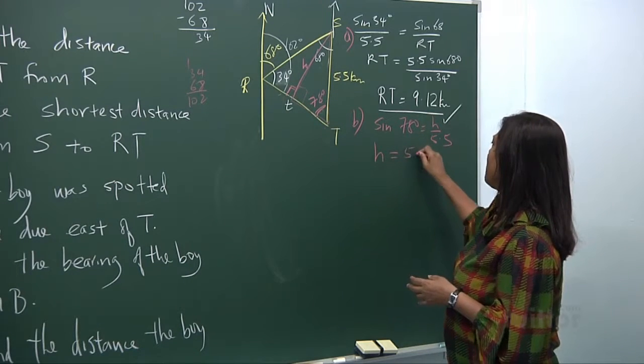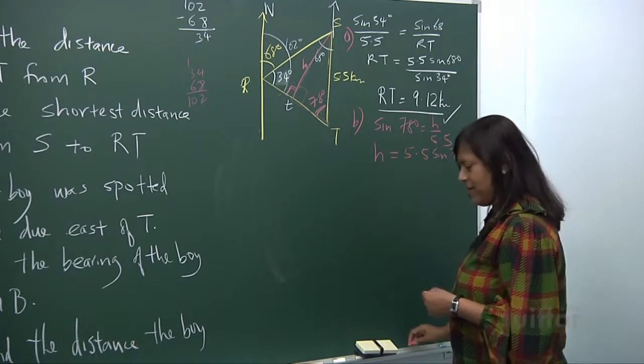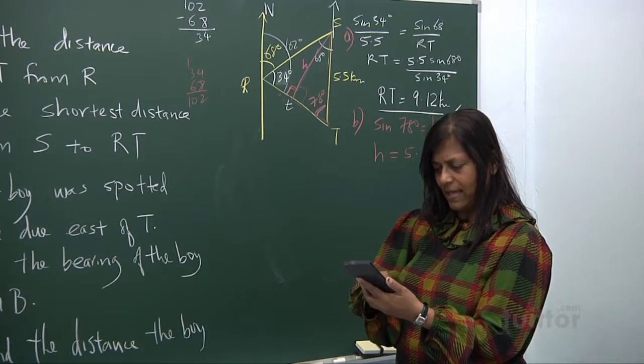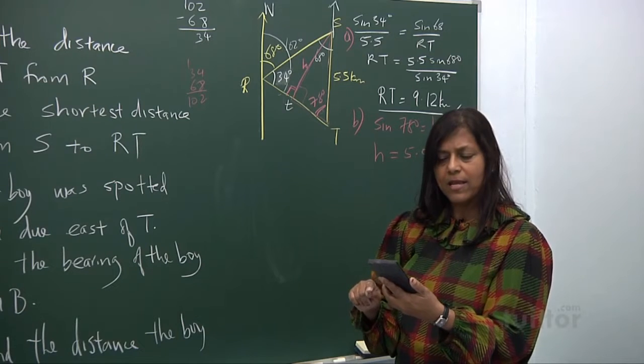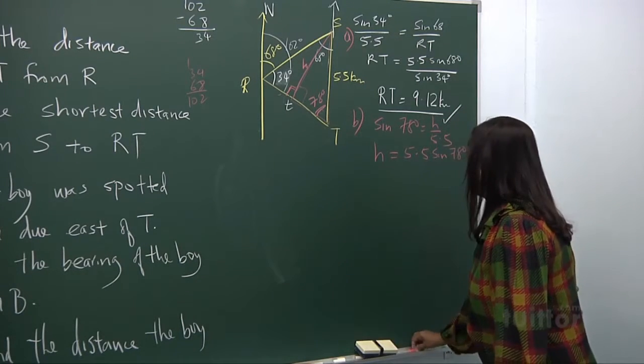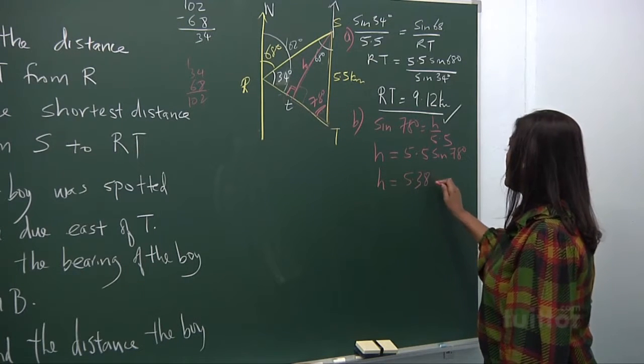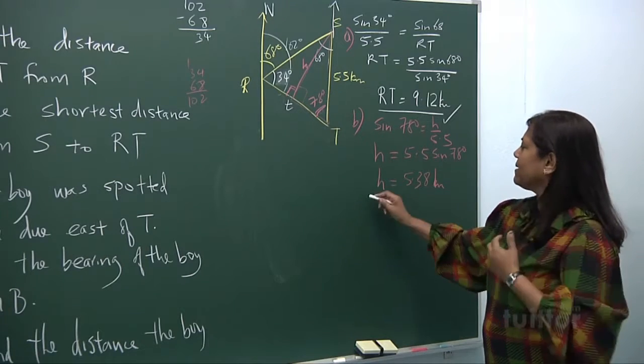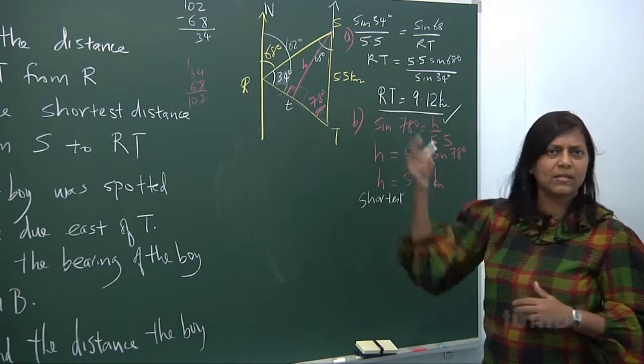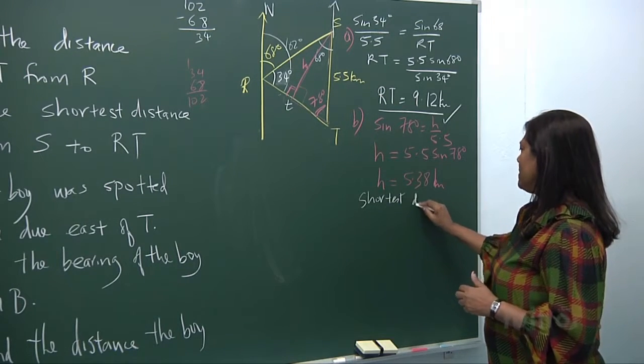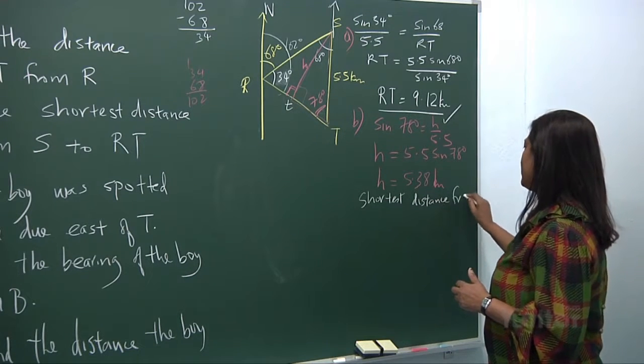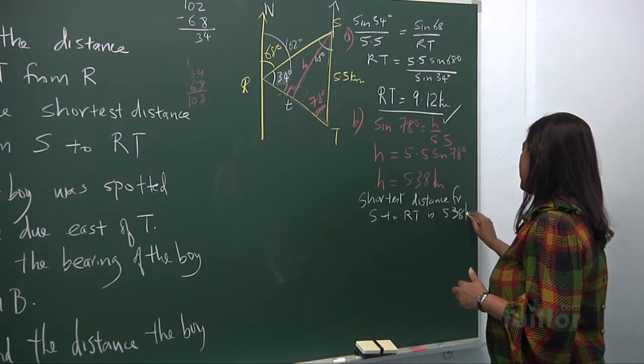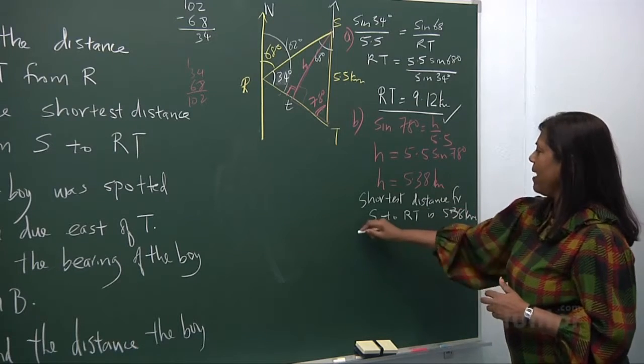So sine 78 degrees will be H over 5.5, so H will be 5.5 sine 78 degrees. Use your calculator again. You look at it again, is it 5.5 sine 78? And you get 5.379, 5.38. So what you've got, your H is 5.38 kilometers. So the shortest distance, whenever you answer questions, please have them in complete sentence. Express it clearly, because who knows what is H standing for, only you know. Shortest distance from S to RT is 5.38 kilometers. So you've got that done.